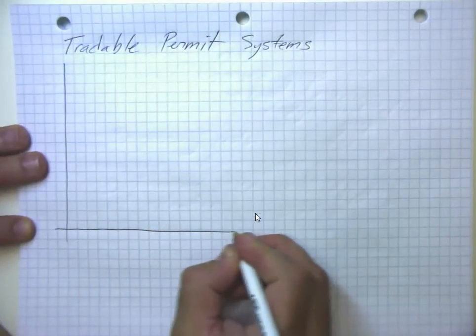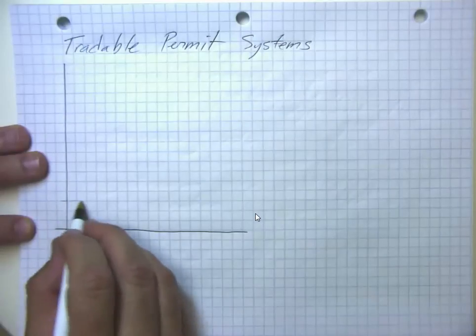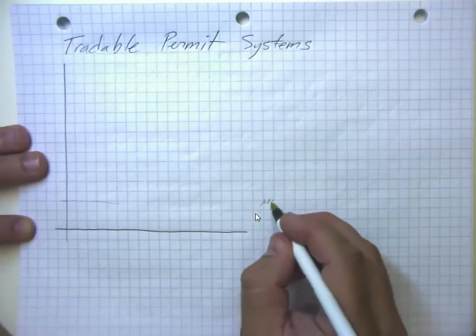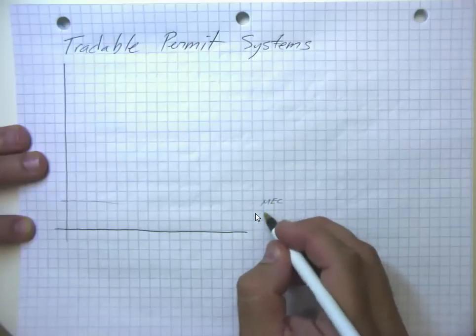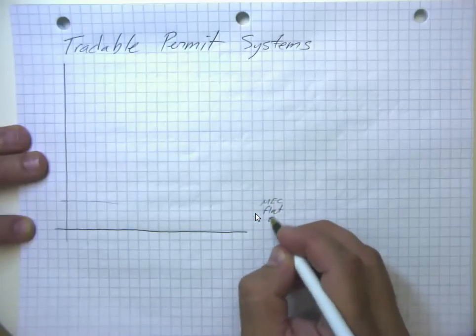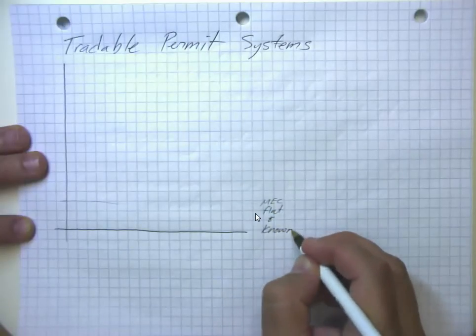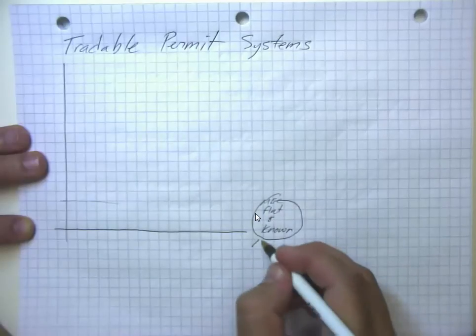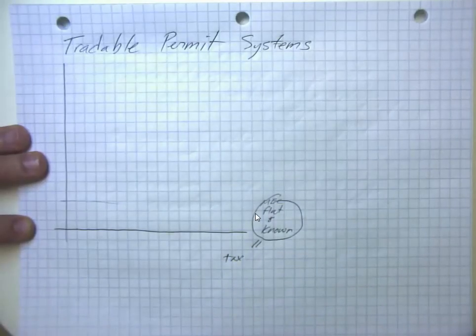And that's a great solution when the marginal external cost is flat and known. Because then we can go ahead and put the tax on there, and that's basically great.